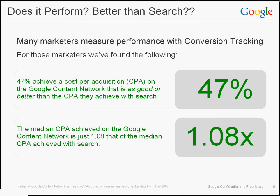Does it actually perform? Google search advertising is a good benchmark for ad performance, so we compared the conversion performance of search ads to that of contextual targeting. We found that 47% of advertisers enjoy a cost-per-acquisition on the Google content network as good or better than the cost-per-acquisition they achieve with search. Looking at the median advertiser, for every $1 spent acquiring a customer with search, they only spend $0.08 more acquiring a customer with the content network. These findings support that contextual targeting on the Google content network performs.